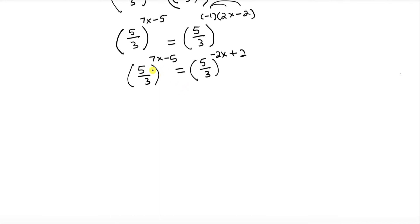Now we are pretty much done. As you can see, the base over here is the same as the base. In other words, bases on both sides are the same. As long as the bases are the same, you can set the exponents equal. So 7x minus 5 equals negative 2x plus 2.